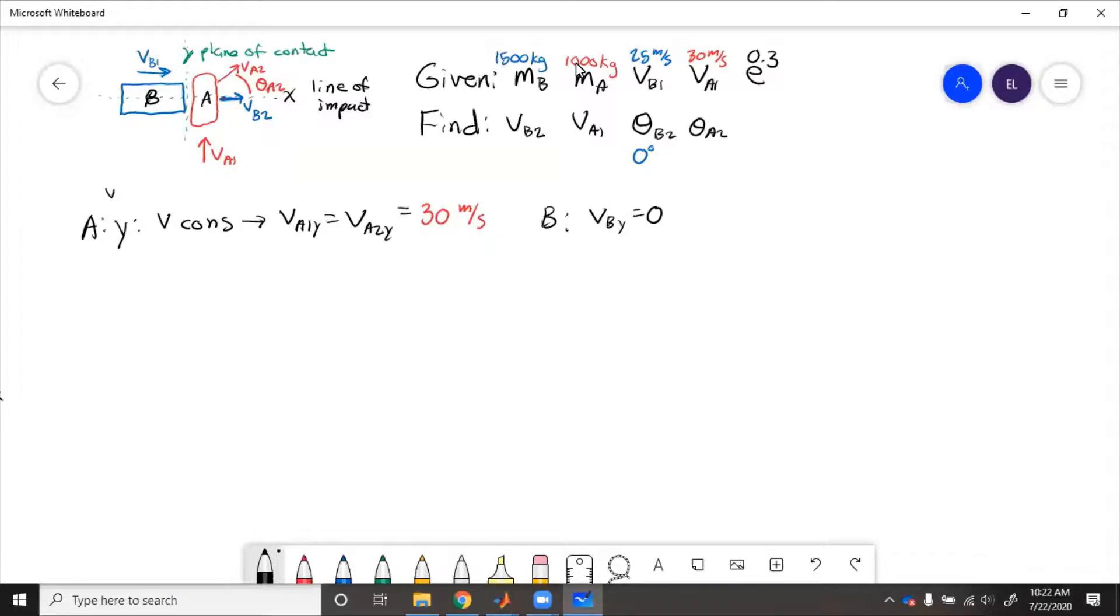Now in the x direction, well, in the y direction we had velocity conserved. So now in the x direction, we have momentum conserved. So we have MAVA1X plus MBVB1, because we could put VB1X, but we know that VB1 is only going in the x direction, so we'll just say VB1 equals MAVA2X plus MBVB2, because again, B is only going in the x direction after collision. Then we need the E equation.